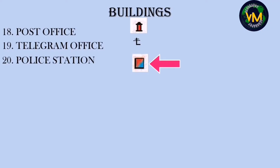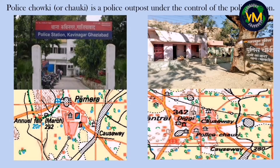Number twenty is a police station. In some maps, instead of police station, 'police chauki' will be shown — it is a police outpost under the control of a police station. In this map you can see the difference between a police station and a police chauki.